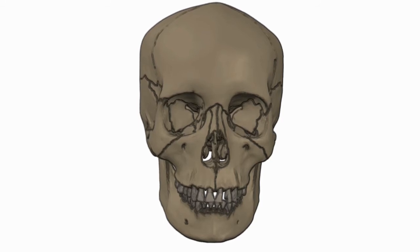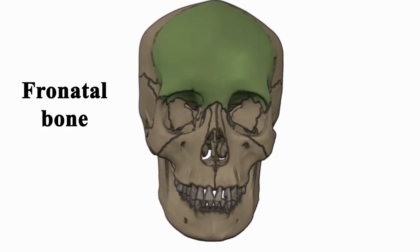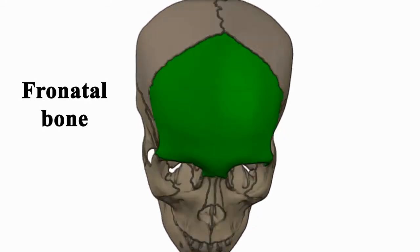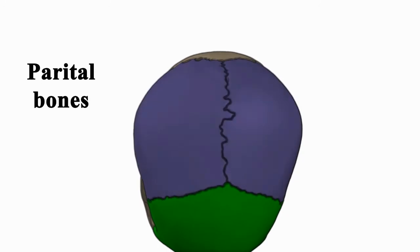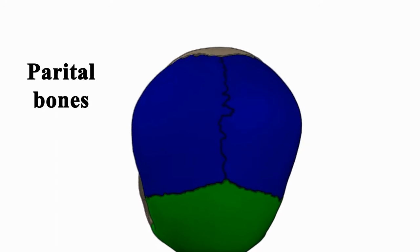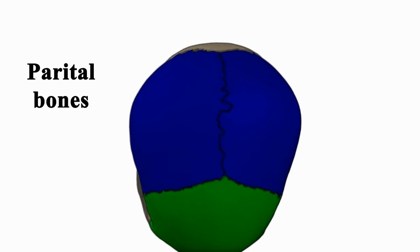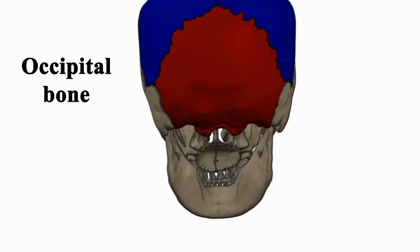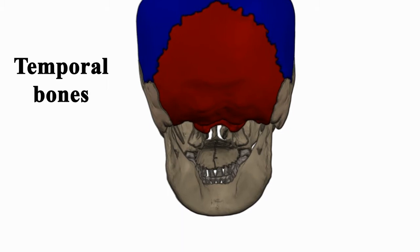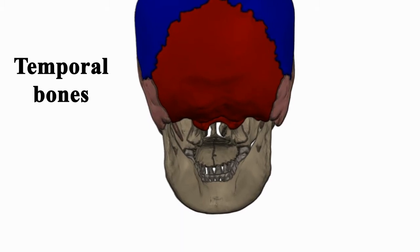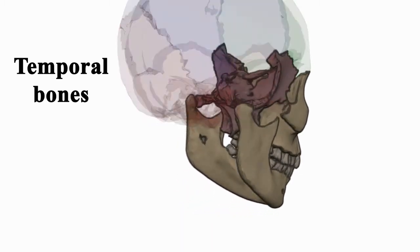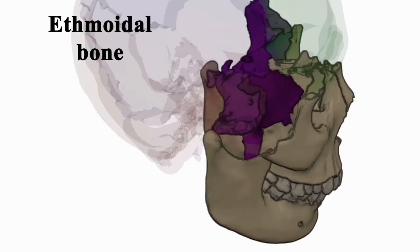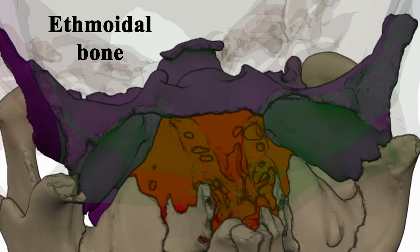Bones of the cranial part are: one frontal bone, two parietal bones (left and right), one occipital bone, two temporal bones (left and right), one sphenoidal bone, and one ethmoidal bone.